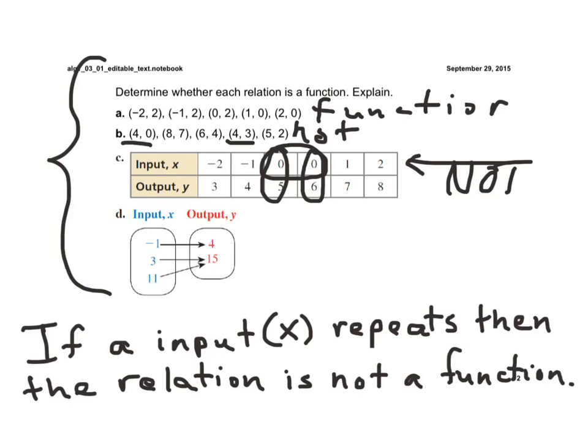Now, in this case, the input of x, negative 1 goes to 4, 3 goes to 15, and 11 goes to 15. I can have the same output value paired with different inputs, but I can't have the same input paired with 2 different outputs. So, to really make this simple, when you're trying to determine if a relation is a function, we simply just look to see if x repeats.